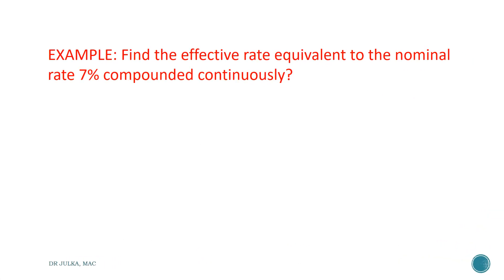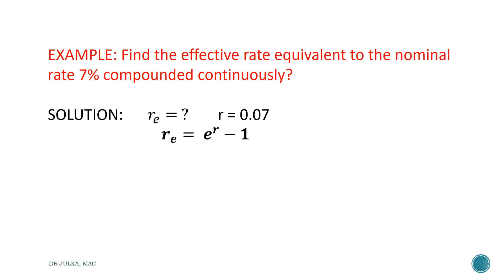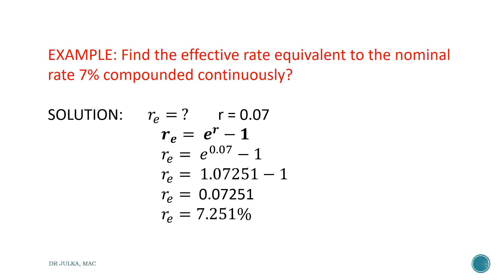First example: we want to find the effective rate equivalent to a nominal rate of interest of 7% compounded continuously. We want to calculate Re, and R is given as 7%, which implies R is 0.07. Using the formula Re equals e raised to the power r minus 1, and putting R equals 0.07, we get Re equals e raised to the power 0.07 minus 1. e raised to the power 0.07 equals 1.07251. Therefore Re equals 0.07251, which implies the effective rate of interest is 7.251%.